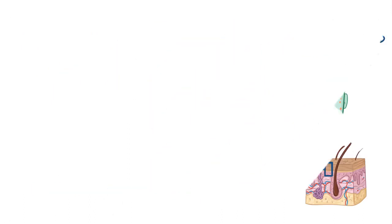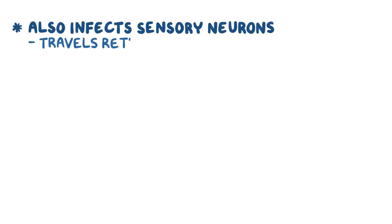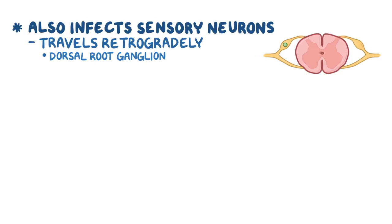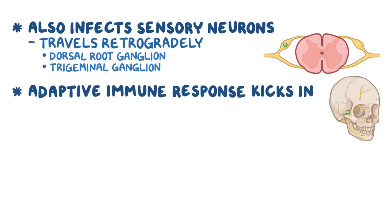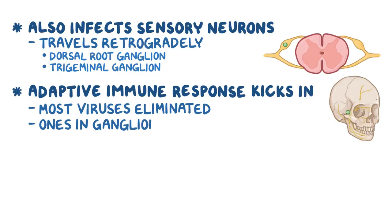In addition to infecting keratinocytes, the virus also infects sensory neurons in the skin. In those neurons it travels retrogradely — meaning backward — through the neuron to the dorsal root ganglia, or, if it's on the face, the trigeminal ganglia. Over time, when the adaptive immune reaction kicks in, most of the viruses in the body are eliminated, but the ones in the ganglia are spared and can remain dormant for many years. Most commonly, the virus establishes a latent state within the trigeminal ganglia and the dorsal root ganglia.